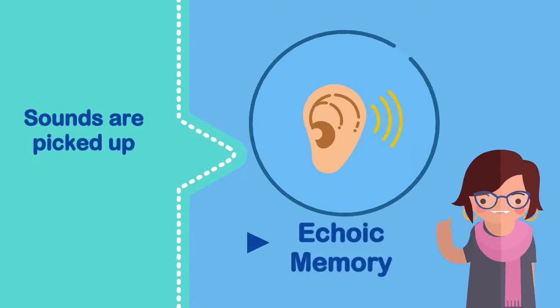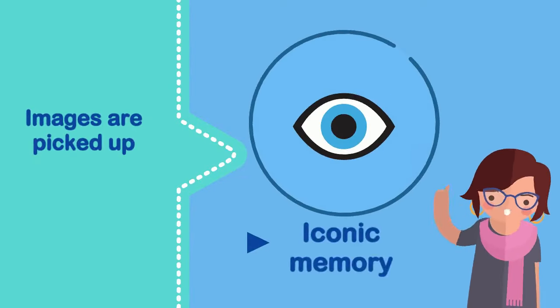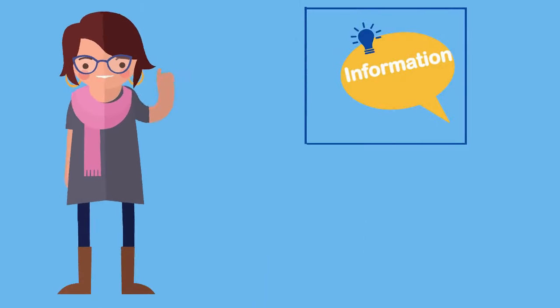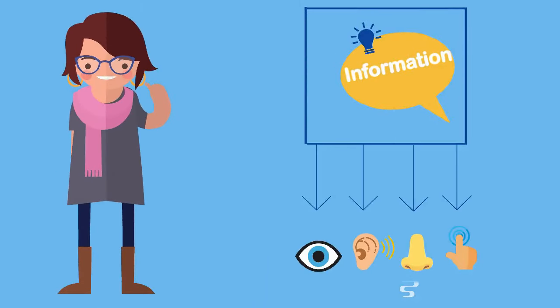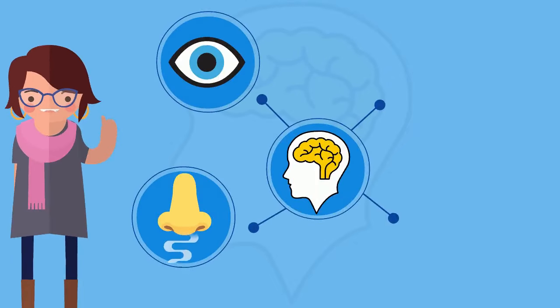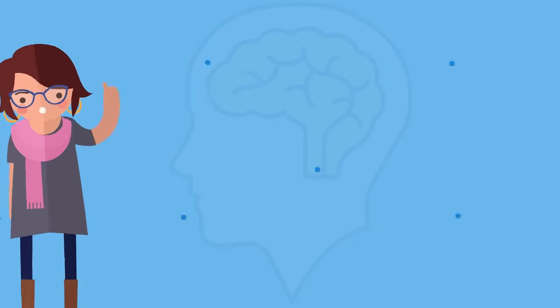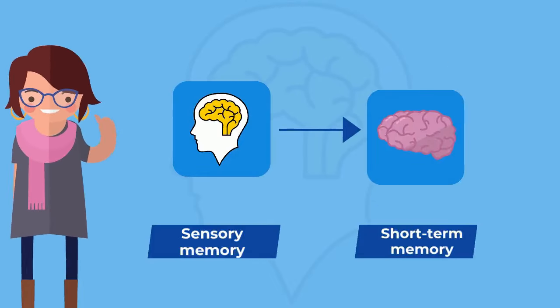Sounds are picked up by the echoic memory and images are picked up by the iconic memory. This information is then transferred to the sensory memory. Only when we pay particular attention to a particular sense is it then transferred from our sensory memory to our short-term memory.